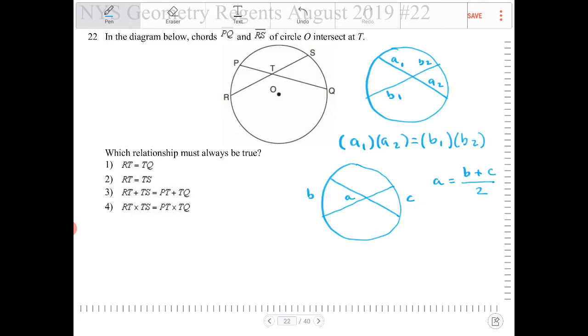RT and TQ. RT equals TQ. Does that have to be true? They do not have to be equal. No.